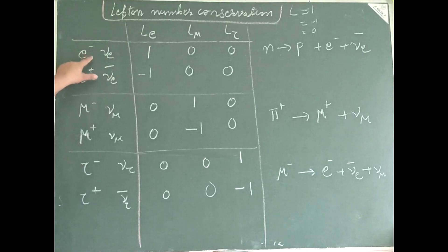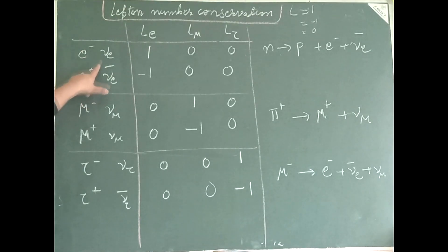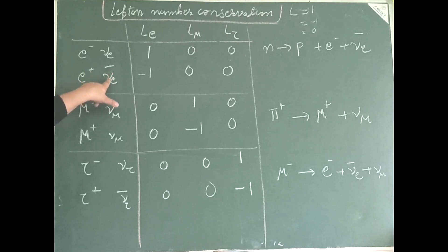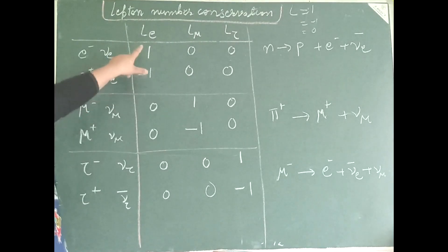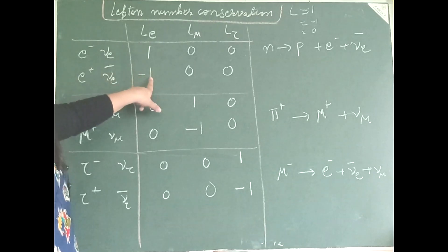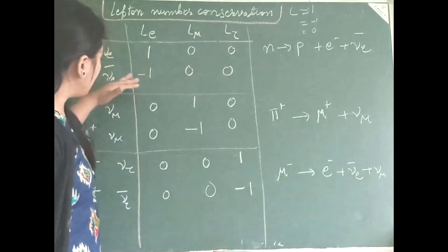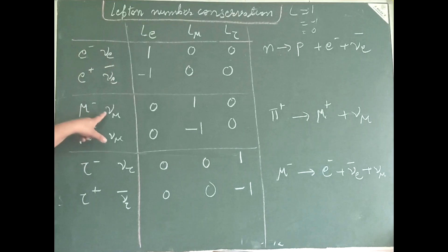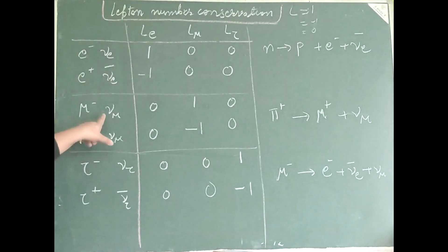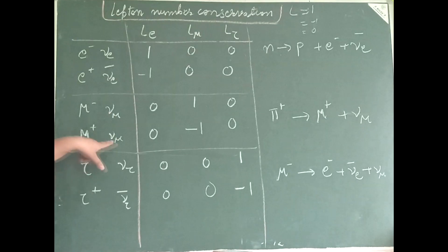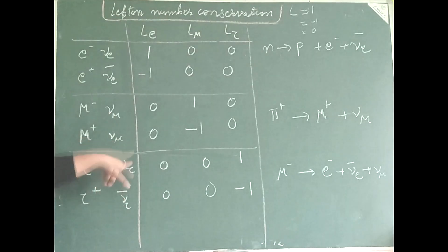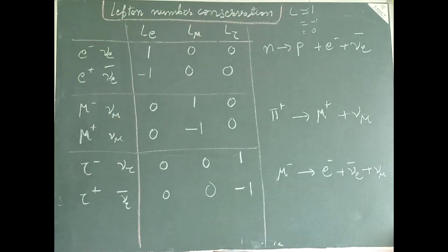Whereas the antiparticles of those — the positron and the electron anti-neutrino — the electron lepton number is minus 1 and the remaining ones are 0. Similarly, we have lepton numbers for muon neutrinos and tau neutrinos.